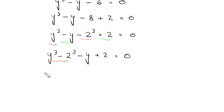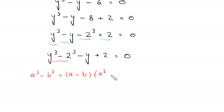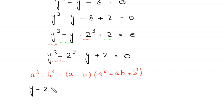Using the algebraic identity a³ - b³ = (a-b)(a² + ab + b²), the expression y³ - 2³ becomes (y-2)(y² + 2y + 4).